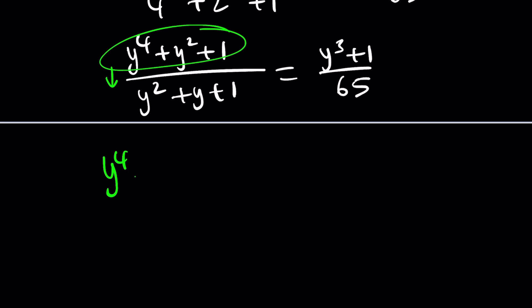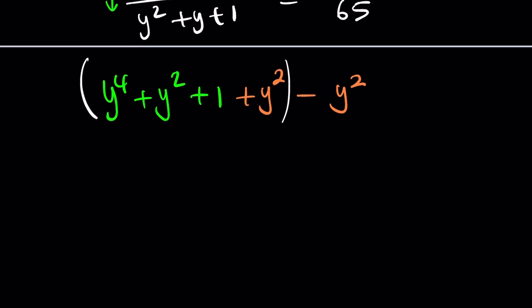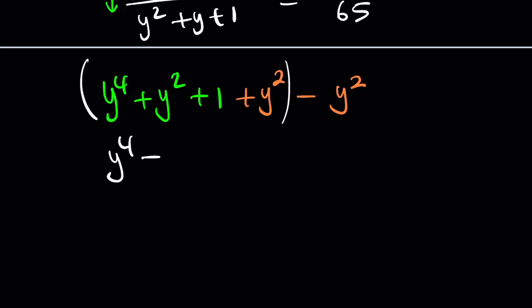So how is this factorable? Fourth powers are very special because here's what you can do. You can actually add y^2 to both sides and subtract it. The idea is if you add the y^2, you get a perfect square, and if you subtract it to make up for the extra y^2 that you added, you get another perfect square, and together they're called difference of two squares. This is y^2 + 1 quantity squared minus y^2.